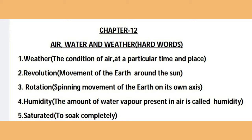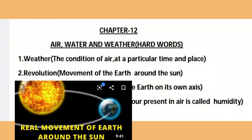The next hard word is 'revolution', spelled R-E-V-O-L-U-T-I-O-N. Revolution means the movement of the Earth around the Sun. When the Earth moves around the Sun, that is called revolution. Revolution causes a change in seasons — winter season comes, summer season comes — all because of revolution.